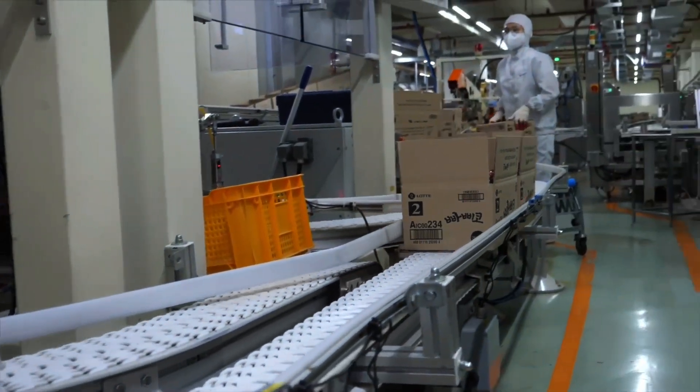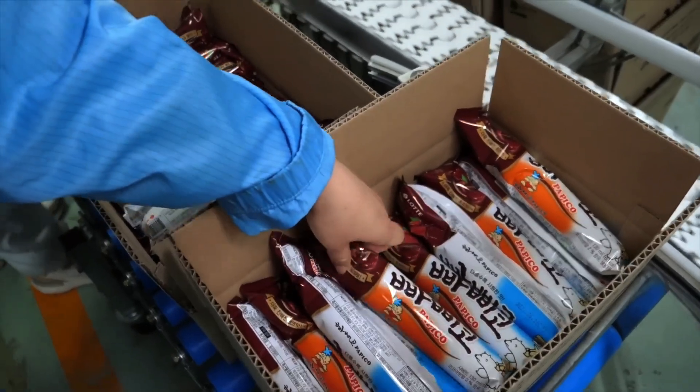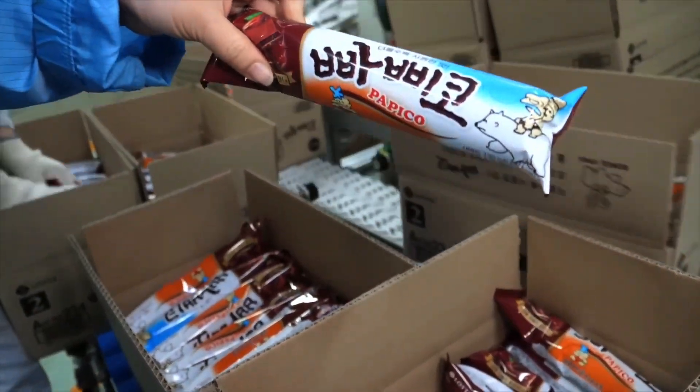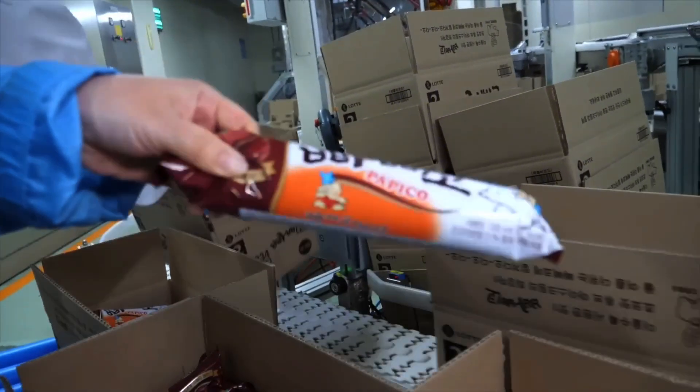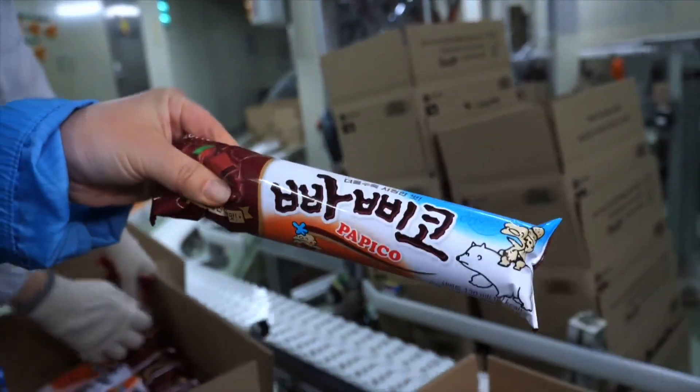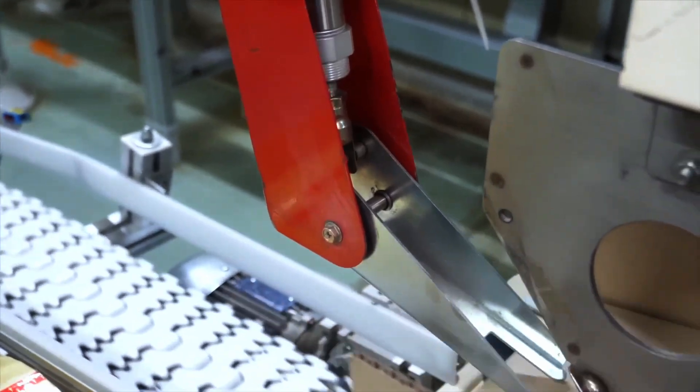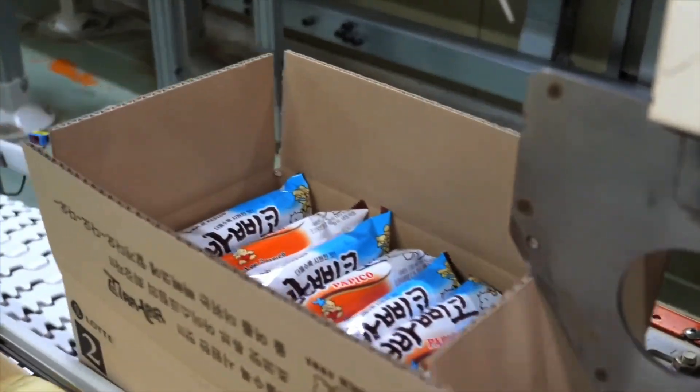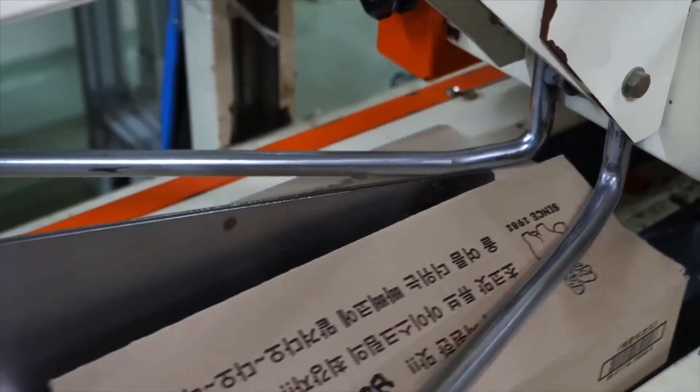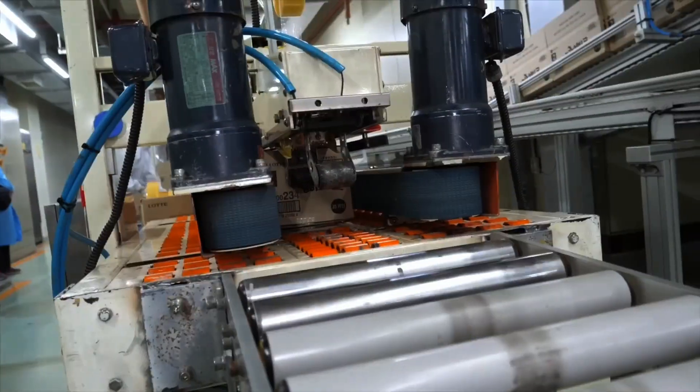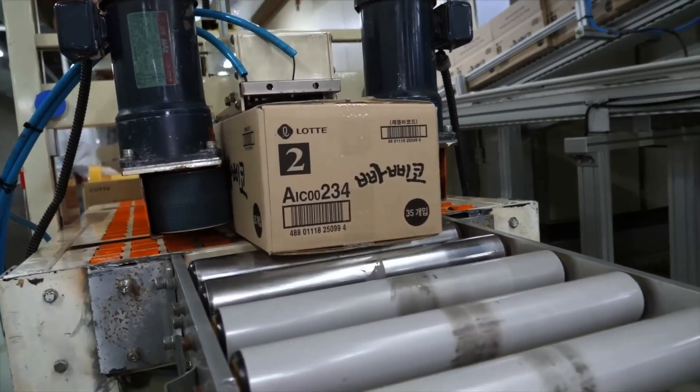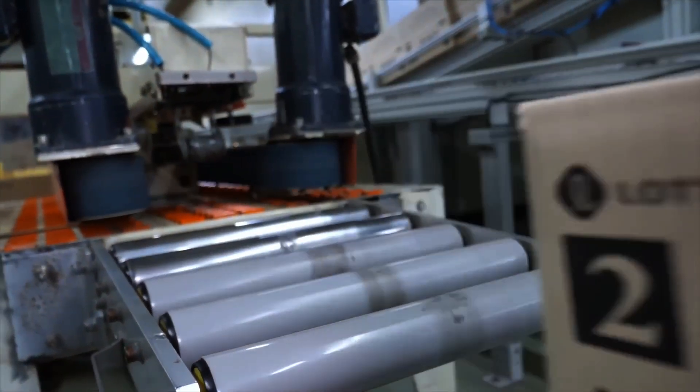After packaging, the finished product is transferred to an automated frozen storage facility. Temperatures here remain between minus 25 and minus 30 degrees Celsius, minus 13 to minus 22 degrees Fahrenheit. These are massive warehouse-sized freezers with multi-level shelving that hold thousands of boxes of ice cream.